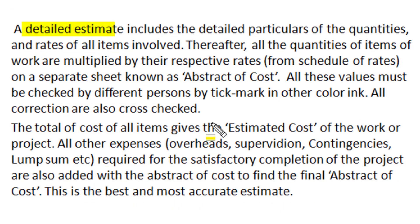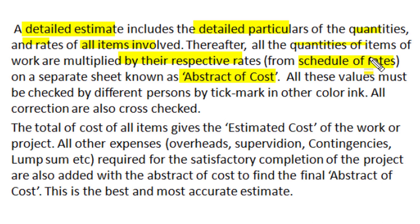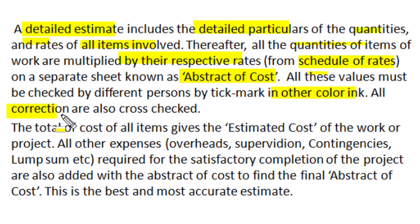One important part of a detailed estimate is the abstract of cost. First, the detailed particulars of quantities and rates of all items involved in project implementation are considered. Thereafter, the quantities of items are multiplied by their respective rates — which come from the basic schedule of rates or from market survey — and a separate sheet known as abstract of cost is prepared. All values in the abstract of cost must be checked by a second person, who tick-marks the checked values in a different color, and corrections are made after cross-checking. The total cost of all items gives the estimated cost of work, including all material and labor cost.